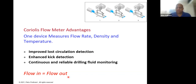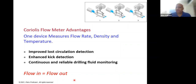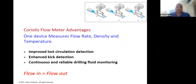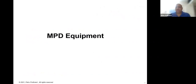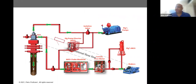We essentially monitor the difference between flow in and flow out while drilling. In conventional drilling, you stop and do a flow check when circulating. With MPD, we are doing a flow check all the time — continuously checking whether we are losing into the well or gaining from the well. Any deviation between flow in and flow out is an indication of a particular issue in the well.